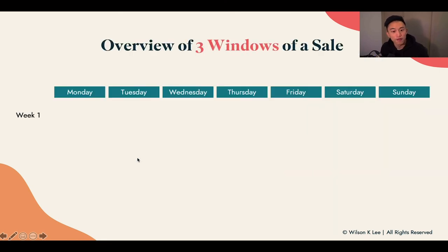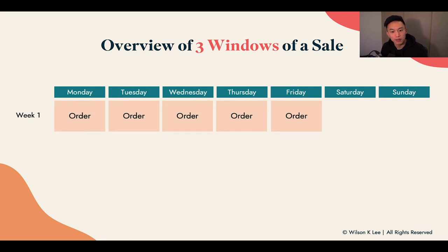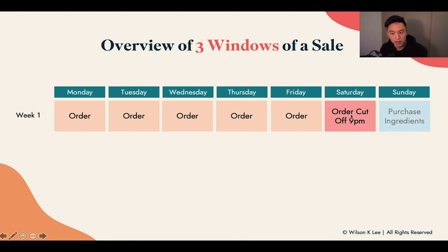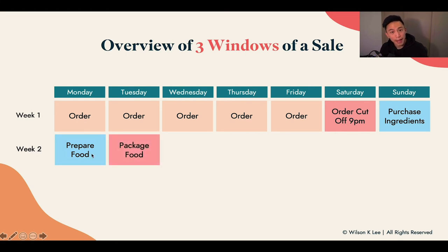As you can see in the visual format, we talked about the ordering window — people can order from Monday all the way until Saturday at 9pm as a cut-off time. This is what it looks like as the first window of sale. Next up is your own preparation: from purchasing ingredients to preparing the food to packaging the food. This is your window for preparation, so you know this is your time. You can set the preparation window that fits best for your schedule.